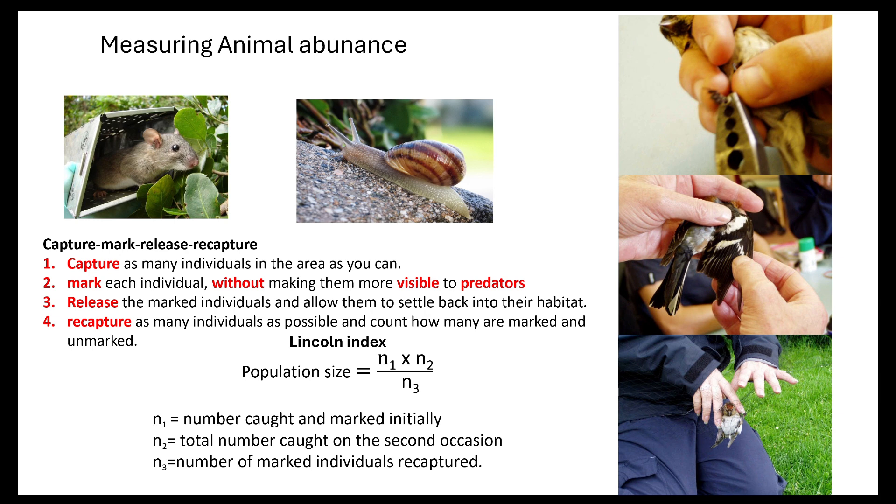It's important you note that you would use something like Lincoln's index for this and this would be your population size equals N1 times N2 over N3. N1 is your number caught and marked initially. N2 is the total number caught on the second occasion. And N3 is the number of marked individuals which were recaptured. So that's one way they could ask you about measuring the abundance of animals. But if they're going to ask you about Lincoln's index, they will be expecting you to use the numbers in the data that they've given you.